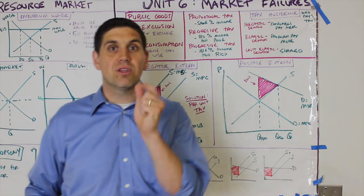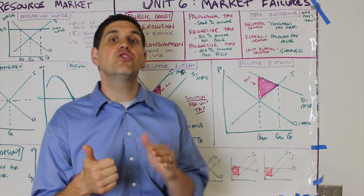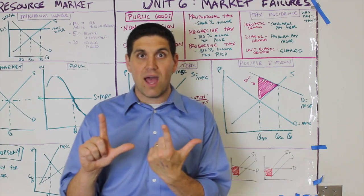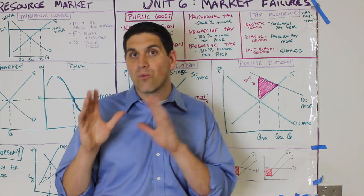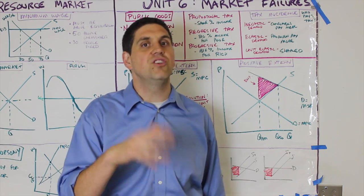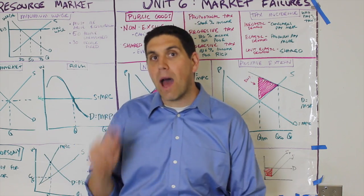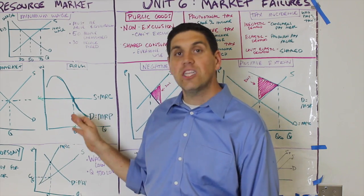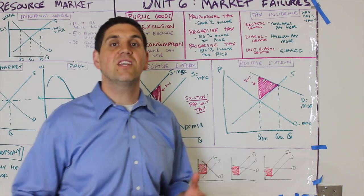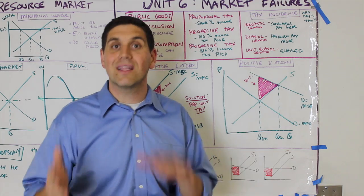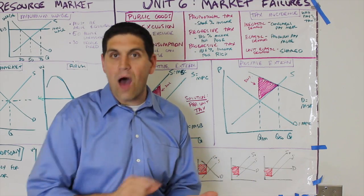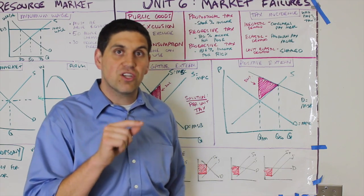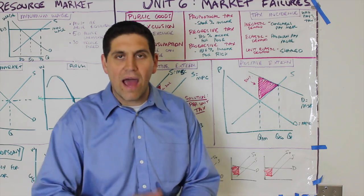Remember, there are several key graphs you absolutely need to know: monopoly with profit and loss, showing socially optimal, fair return, consumer surplus, and producer surplus all in one graph. Also know perfect competition side-by-side graphs showing market and firm. Know how to draw supply and demand with ceilings, floors, shifts, and taxes. Know monopolistic competition in the long run with no economic profit. Know perfectly competitive firms in the resource market and negative and positive externalities. The biggest advice: always draw the graph. When you get the AP test, flip it over, draw out those key graphs, and when you come across questions, go back to the graph — it'll give you the right answer.